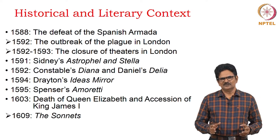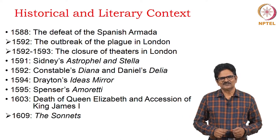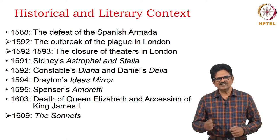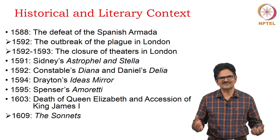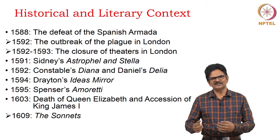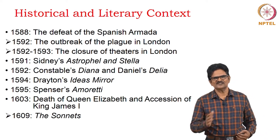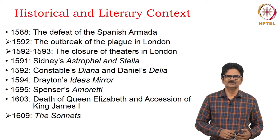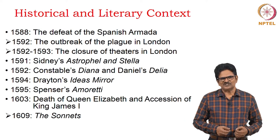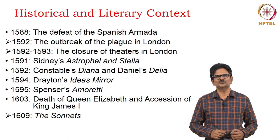The outbreak of the plague in London was seen in 1592. It led to the closure of theatres in London in 1592 and 1593. Shakespeare was more into drama, but when his theatre was closed, he used the time to write poems. In 1591, Sydney's sonnet sequence Astrophel and Stella was published. We have many other sonnet sequences after this. In 1592, Henry Constable published a sonnet sequence, Diana, and Samuel Daniel's sonnet sequence, Delia, was also published. In the next year, we see Michael Drayton's sonnet sequence, Idea's Mirror.